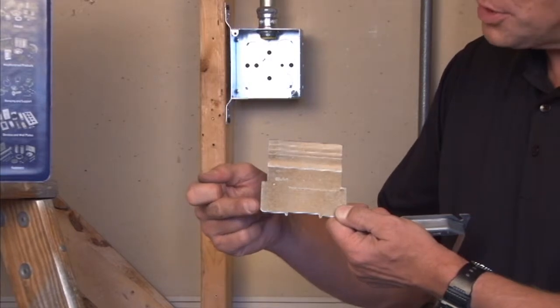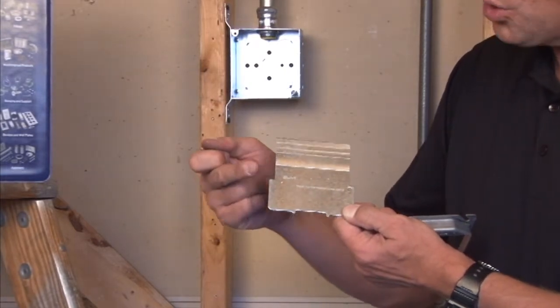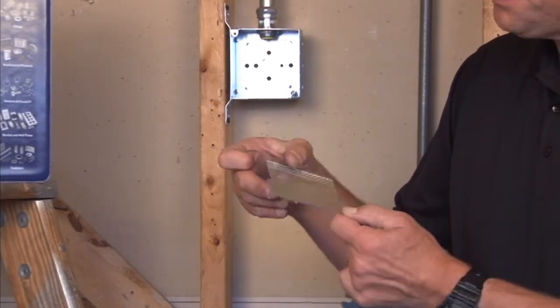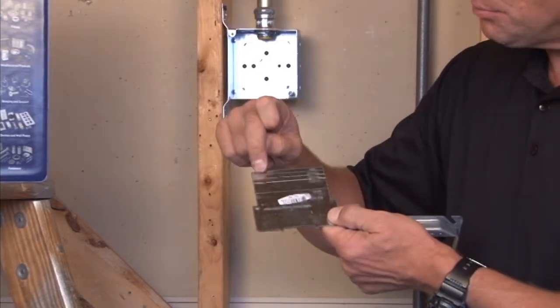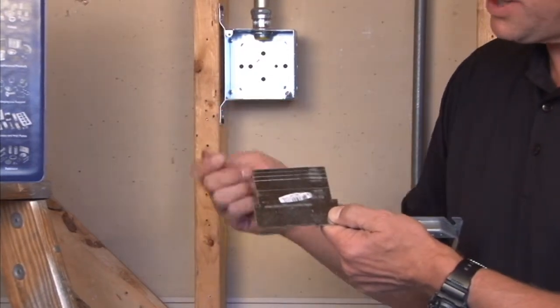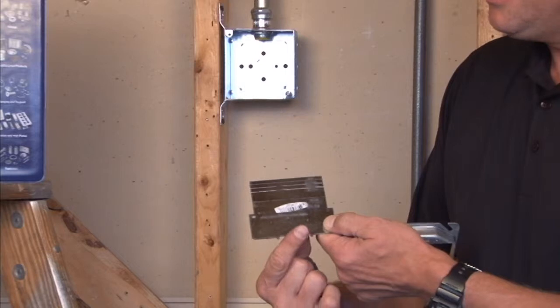They're made for both shallow inch and a half boxes or two and an eighth inch deep boxes. They come with break-off tabs for the desired plaster ring that's going to be attached. The easiest way to